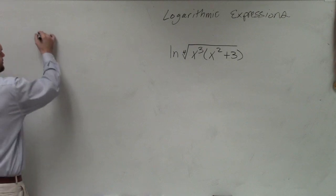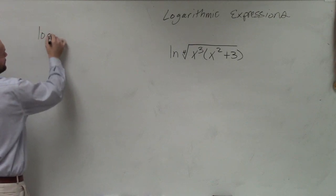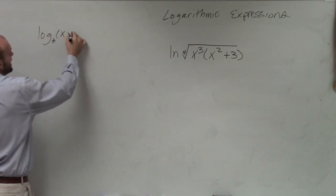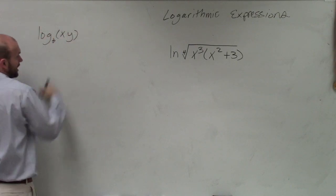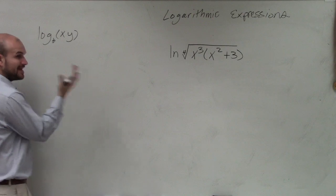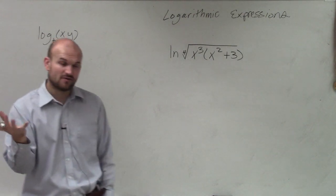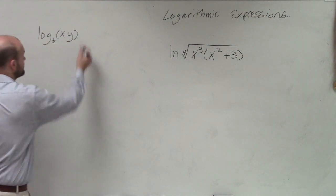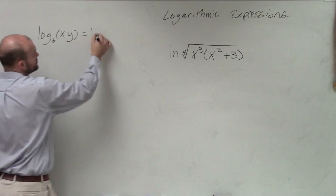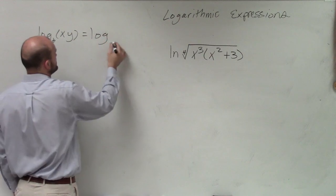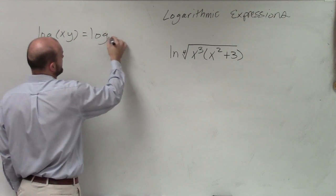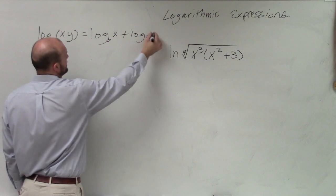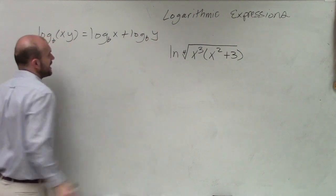So we talked about a couple properties. One of the things we talked about: if we have log base b of x times y — if we have the product of our value of our logarithm — we can break that up into two separate logarithms: log base b of x plus log base b of y.